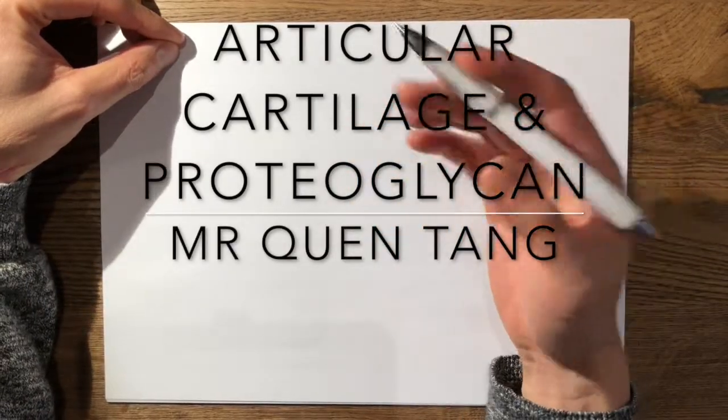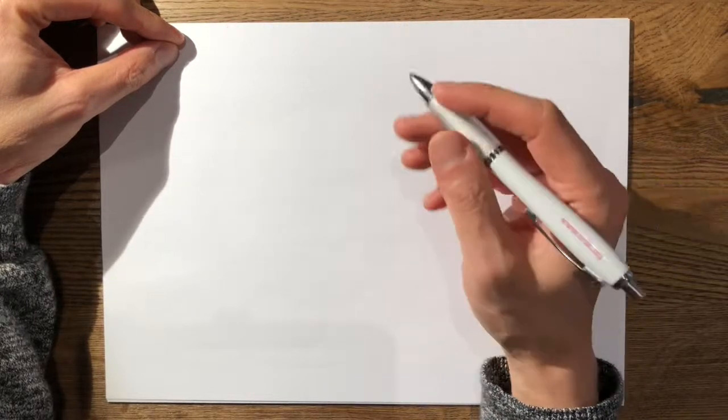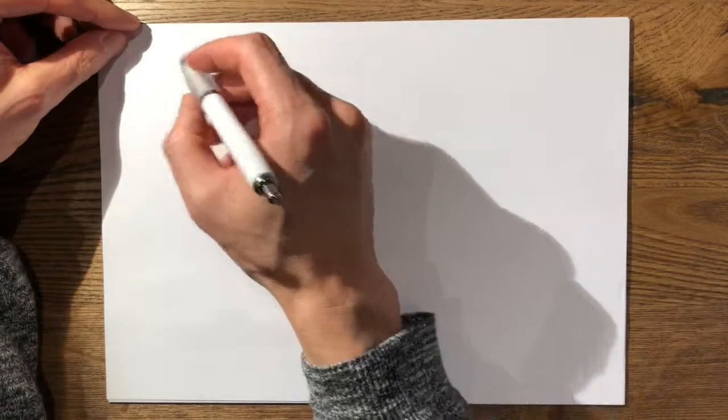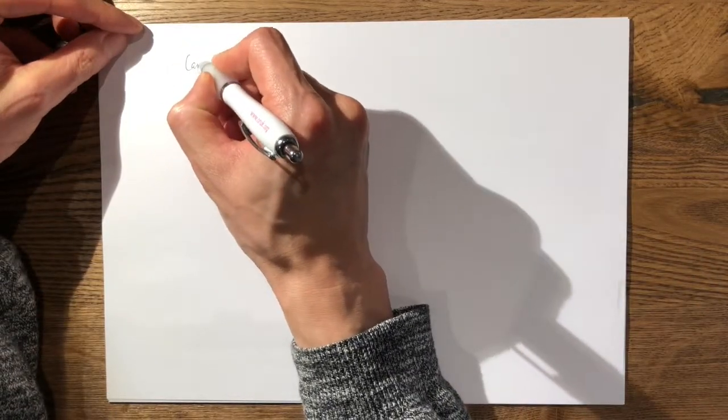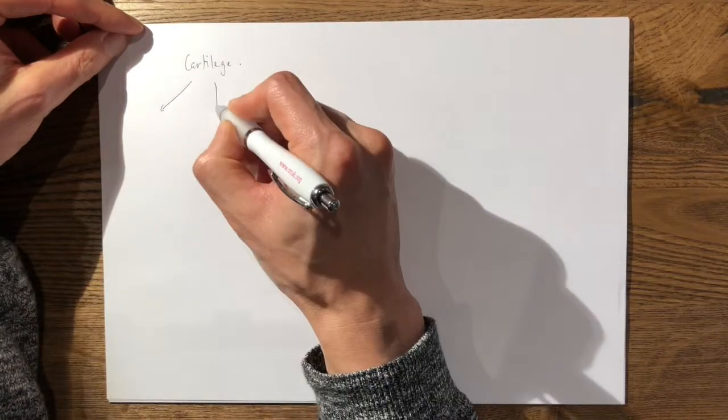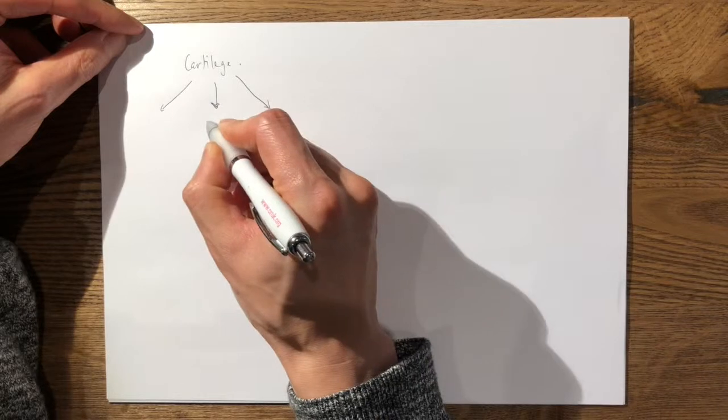Articular cartilage is a highly specialized connective tissue of diarthrodial joints. You can think about its composition in terms of its cells, water content, and the extracellular matrix.